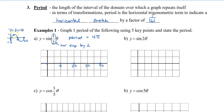Graph the maximum, which is between 0 and 2pi — so halfway is pi. Graph the max there. Then graph the minimum, which on the basic graph is between pi and 2pi. On the stretched graph, halfway between 2pi and 4pi is 3pi, so we plot the minimum at 3pi. Then draw a nice smooth curve through these five points.